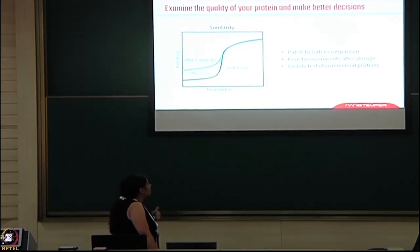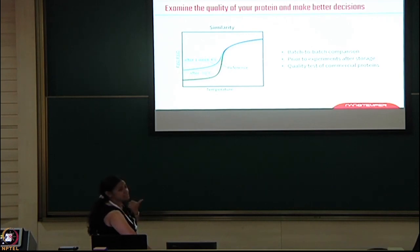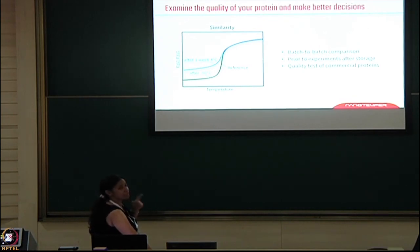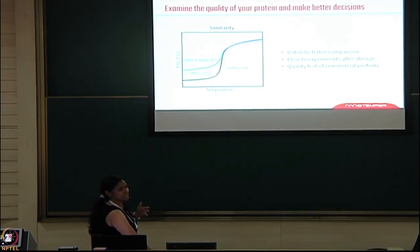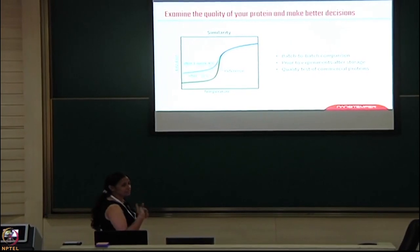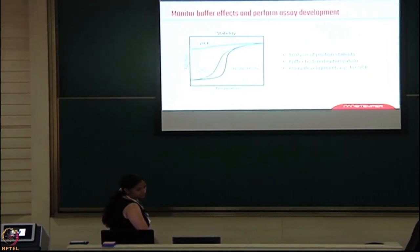Here is one example comparing batch-to-batch screenings. You can see the pure protein and the protein kept at minus 80 degrees are showing almost the same profile. But when used after one week at 4 degrees centigrade, the profile has changed — the shift has gone up, meaning the protein has slightly unfolded. So you can still go for assay, but you can check how the protein quality has varied.